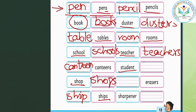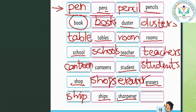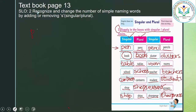One student, more students. More erasers, one eraser. One sharpener, more sharpeners. Pen — pens. Room — rooms. Shops — shop. Ships — ship. Once you're done with this page, let's move on to the next one.